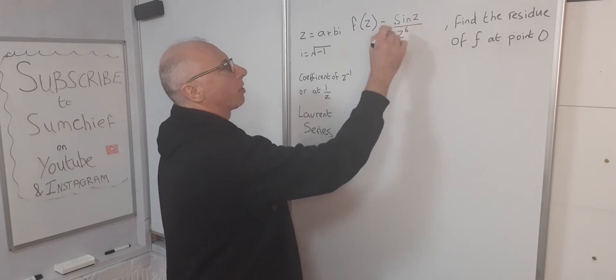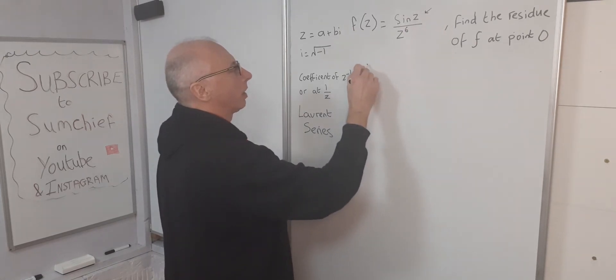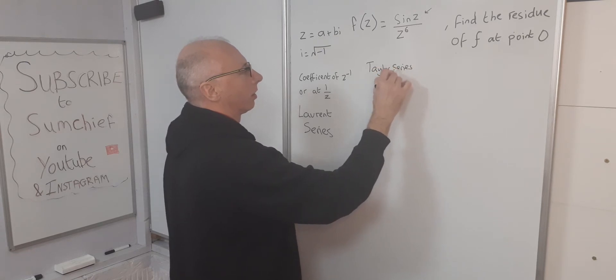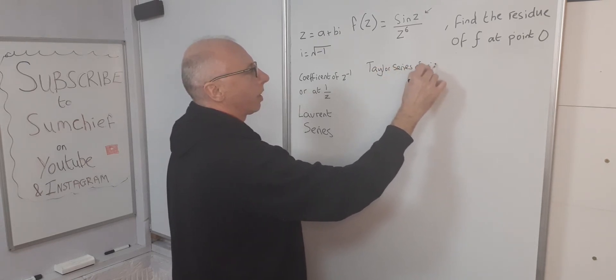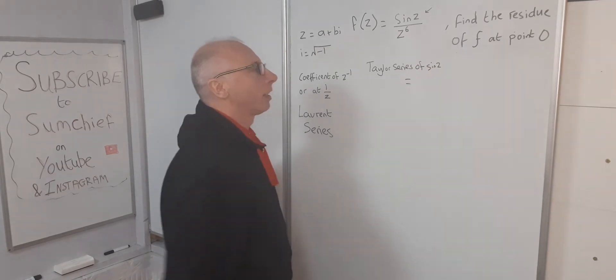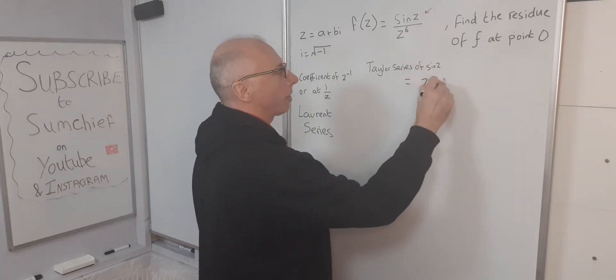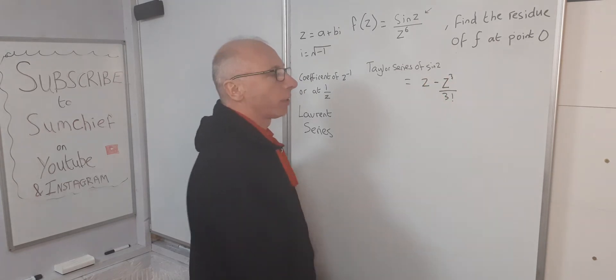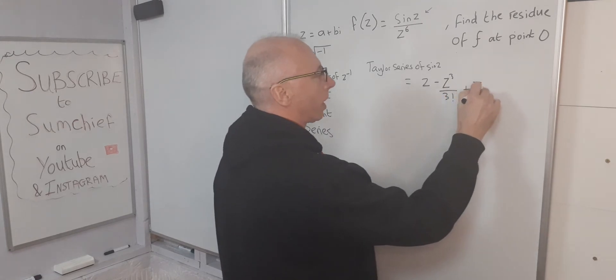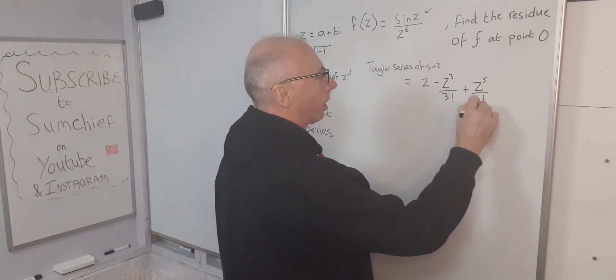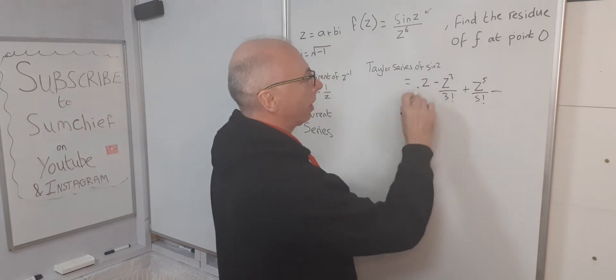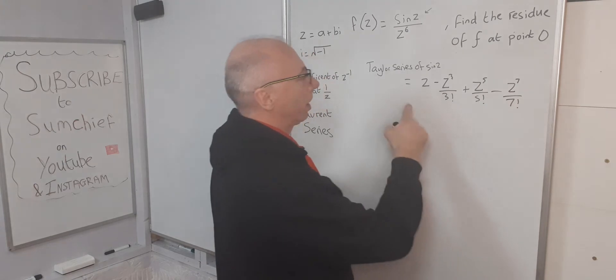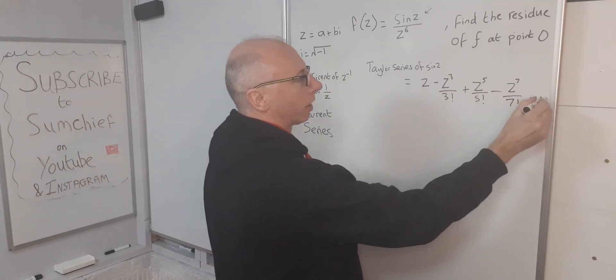Let's deal with the sine of z for now. Taylor series of sine z is simply z minus z cubed over 3 factorial plus z to the 5 over 5 factorial and then a minus again, so alternating the minus and plus signs, z to the 7 over 7 factorial and now you can see the pattern.